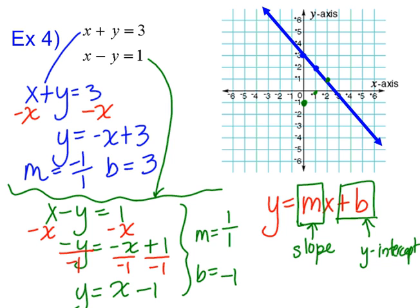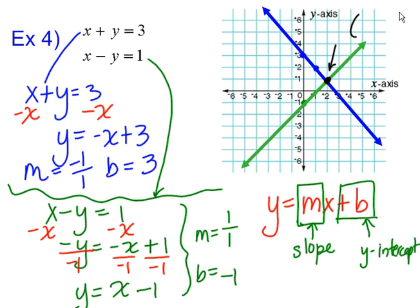We draw our line through those points. This is all about finding a solution — where they cross. Right there is our solution. So the solution to this system is positive two, positive one. This is the answer that satisfies both equations.